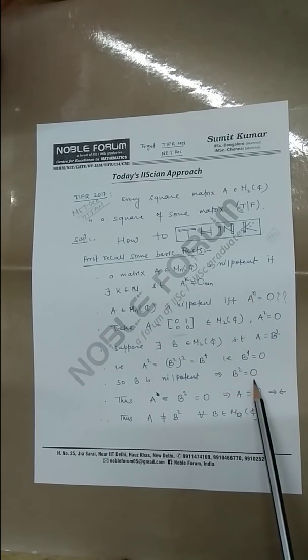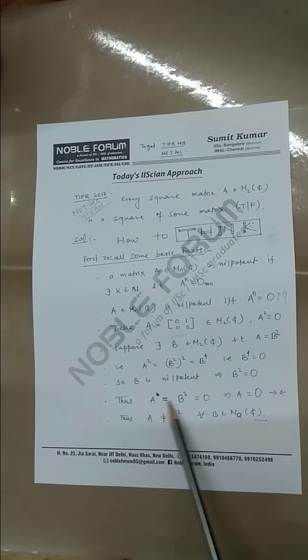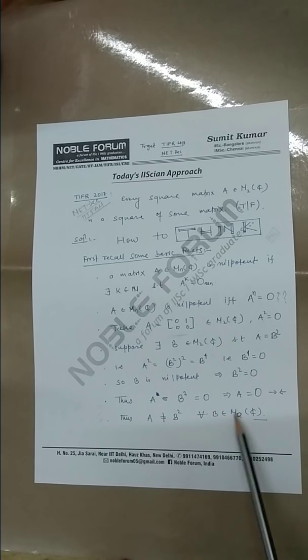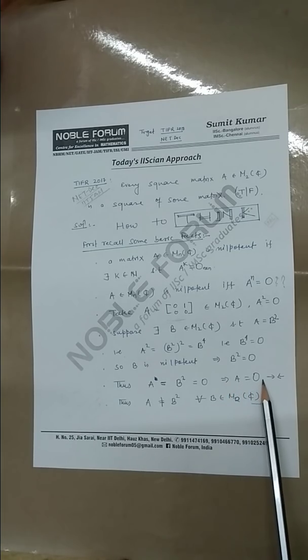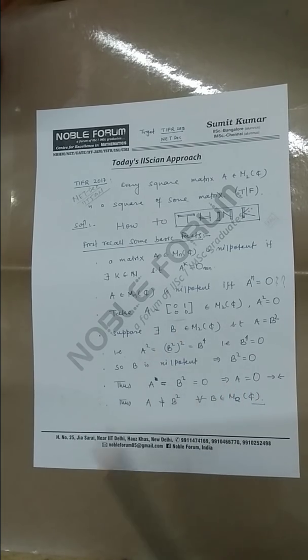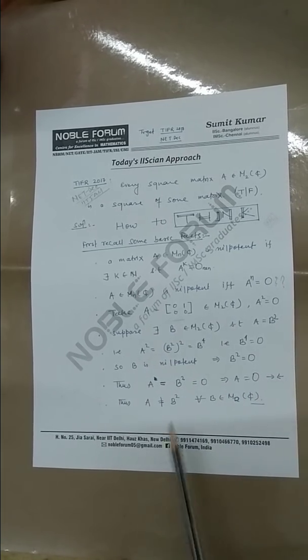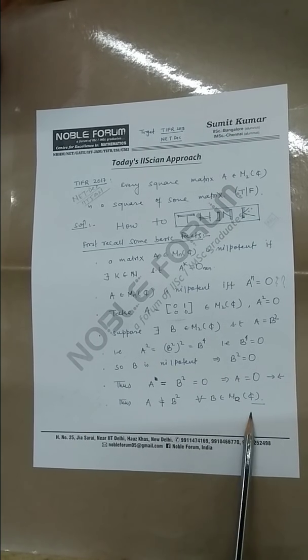B is nilpotent, and hence if the size is 2×2, then B squared equals zero. But A is my B squared, so A equals B squared equals zero. That means A is zero, which is a contradiction because A is a non-zero matrix. Hence A is not equal to B squared for all B belongs to M_2(C).